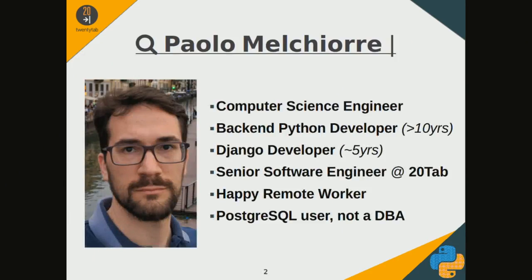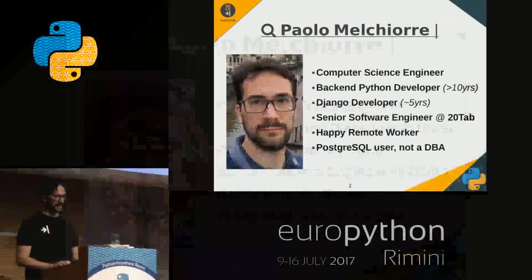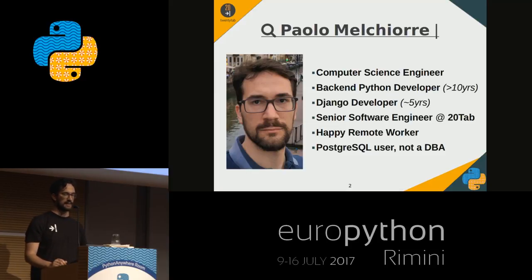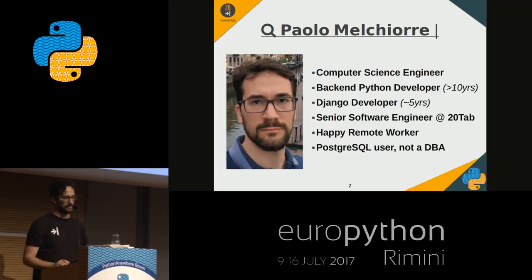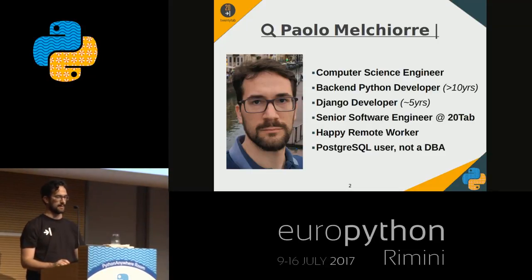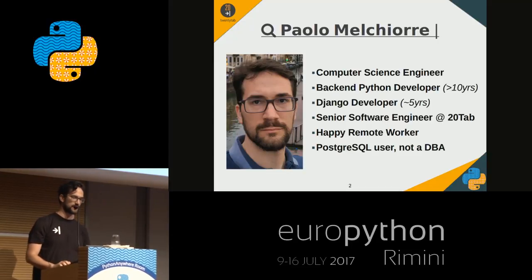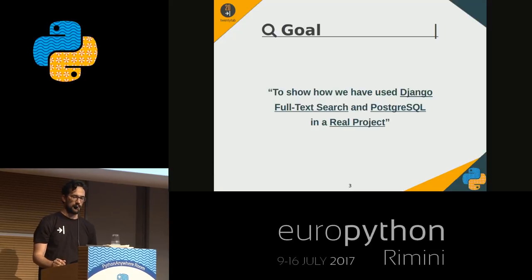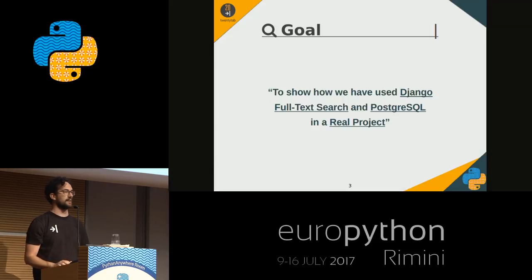My name is Paolo Melchiorre and I'm Italian. I'm a computer science engineer. I am a backend Python developer for more than 10 years and a Django developer for about 5 years. At the present I'm working remotely at 20tab as a senior software engineer. I'm not a database administrator but I'm a loyal user of Postgres in all my projects. With this talk I want to show you how we have used Django full-text search and Postgres in a real project.